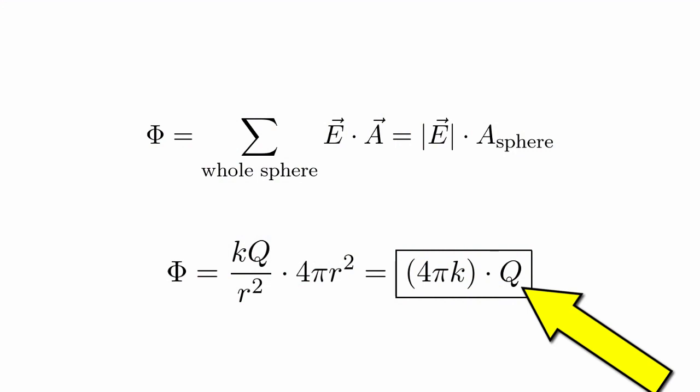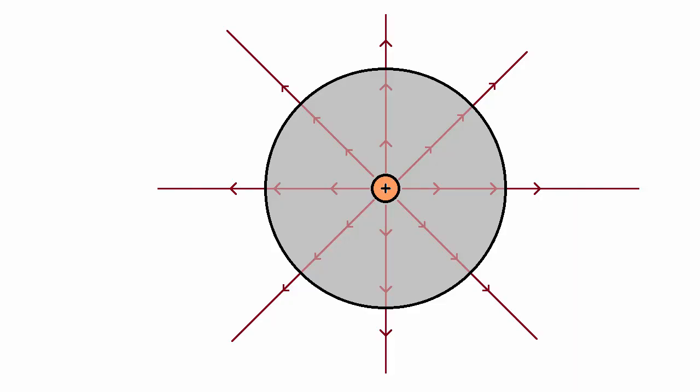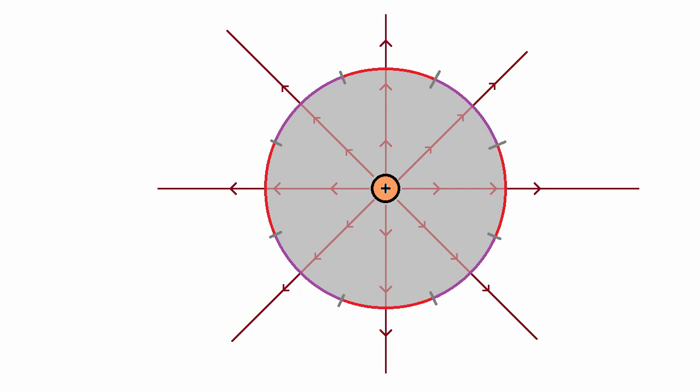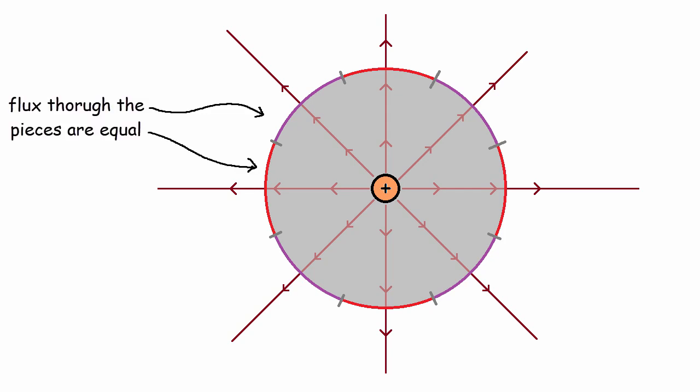So when we have a spherical shell surrounding a charge right in the middle, the only thing that will affect the total flux through that sphere will be the magnitude of our charge. But what if the volume surrounding our charge is no longer a sphere? Let's say we have our sphere and divide it up into equal pieces. Since our shape is perfectly symmetrical, there's no reason there should be unequal flux at any point, so the flux through each divided piece will have to be the same.